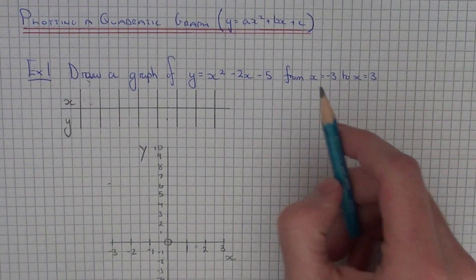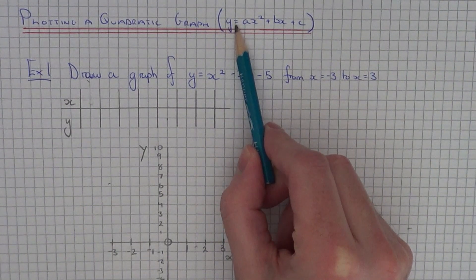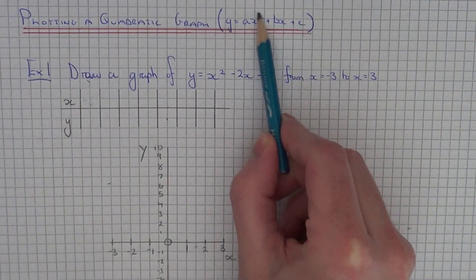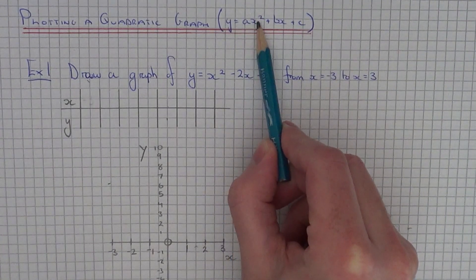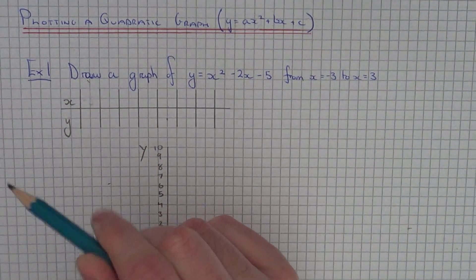Today I'm going to show you how to draw a quadratic graph. That's an equation in the form y equals ax squared plus bx plus c. The highest power of the equation will be x squared. So that's why it's called the quadratic equation.